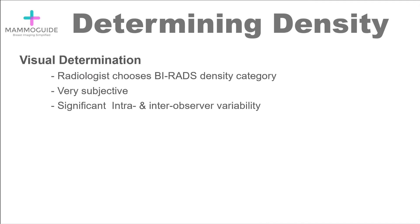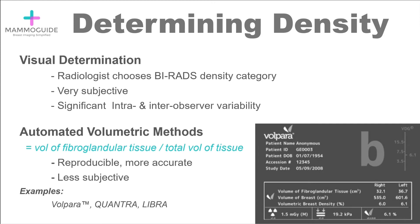How do we actually determine breast density? The old way was visual determination — the radiologist would simply choose a BIRAD density category while looking at the image. This is very subjective, with significant intra- and inter-observer variability. What has emerged in recent years are automated volumetric methods, where software measures the volume of fibroglandular tissue and divides it by the total volume of tissue. This is much more reproducible and accurate. Common software products include Volpara, Quantra, and Libra.